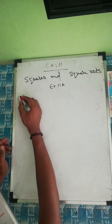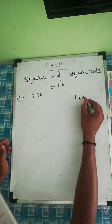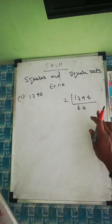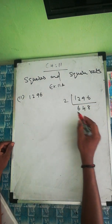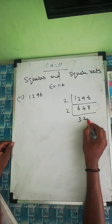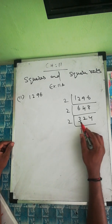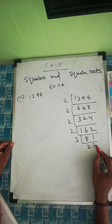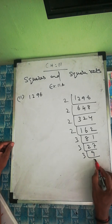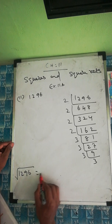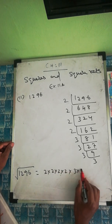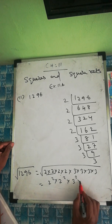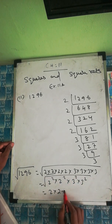For question 2, the number is 1296. We apply the same prime factorization process: dividing by 2 repeatedly, then by 3 repeatedly. The factorization gives us 2 × 2 × 2 × 2 × 3 × 3 × 3 × 3, which means 2² × 2² × 3² × 3².